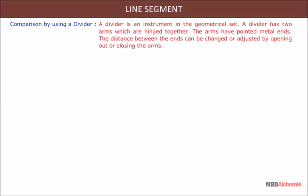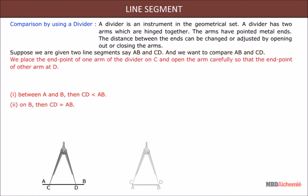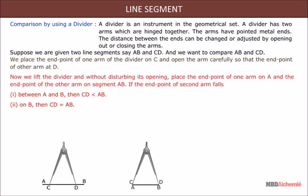Comparison by using a divider: a divider is an instrument in the geometrical set. It has two arms which are hinged together, with pointed metal ends. The distance between the ends can be adjusted by opening or closing the arms. To compare line segments AB and CD, place one arm of the divider on point C and open it carefully so that the other arm is at D. Then lift the divider and, without changing its opening, place one arm on A.